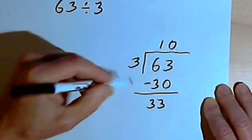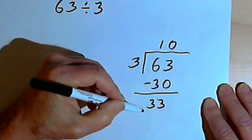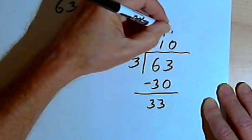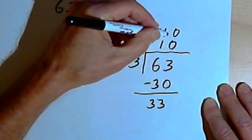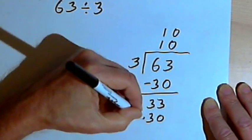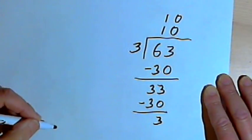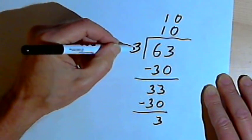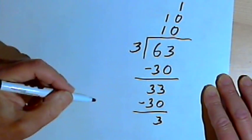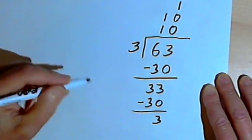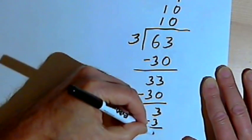And now I'm gonna ask myself again, how many 3's could I take away from 33? Well, I could take away 10 more. So I'll put another 10 on top of the box. Since I've taken away 10 more 3's, that means I've taken away 30. So I have to subtract 30 from 33. When I do that, I get a 3 remaining. Now I want to know how many 3's can I take away from that remaining 3. Well, the answer is 1. So I'll write a 1 on top of the box. And that means I have to subtract 3 from that 3 that was remaining. And I have no remainder.